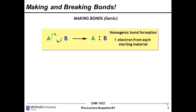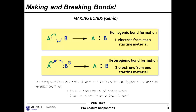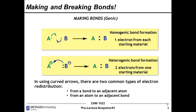When we're making bonds, we can use curly arrows the other way around. Two radicals can come together with fish hook arrows to create a sigma bond. Alternatively, the two electrons come from one entity — in this case B, which was our nucleophile — and those two electrons move towards the electrophile. In using curved arrows, there are two common types of electron redistribution: from a bond to an adjacent atom, or from an atom to an adjacent bond — in other words, the making and breaking of bonds.